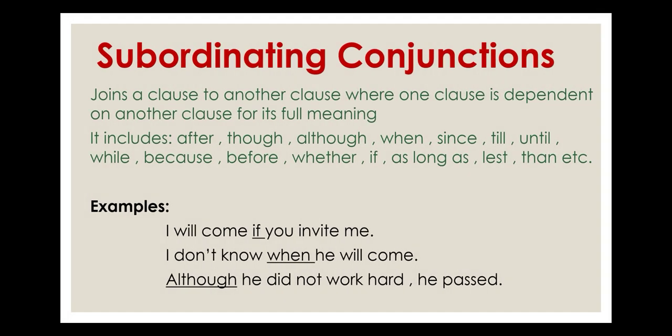The next type is subordinating conjunctions. Subordinating conjunctions are used to join one clause to another clause, where one clause is dependent on the other for its full meaning. They include: after, though, although, when, since, till, until, while, because, etc. Examples: 'I will come if you invite me.' 'I don't know when he will come.' 'Although he did not work hard, he passed.'